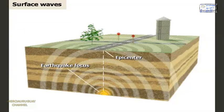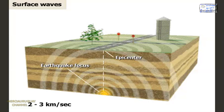Surface waves radiate outward from the epicenter, the point on the surface closest to the focus. Surface waves are slower than body waves, traveling at 2 to 3 kilometers per second. They can change the surface of the Earth as well as damage homes, buildings, and other structures.